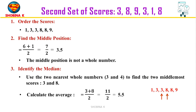Now let's move on to the second example with the scores 3, 8, 9, 3, 1, and 8. First, order the scores in ascending order. The ordered scores are: 1, 3, 3, 8, 8, 9.